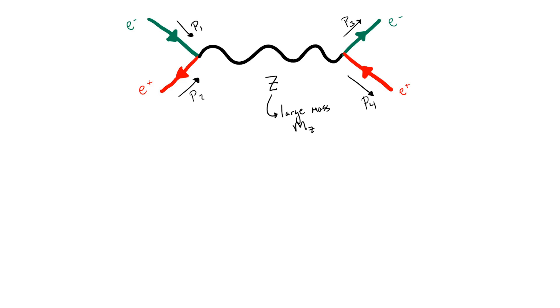Without the uncertainty principle, this process can't occur unless the incoming electron-positron state has an energy greater than or equal to this mass of the intermediate particle. Otherwise, the system will not have enough energy to produce this particle, even if it's at rest.